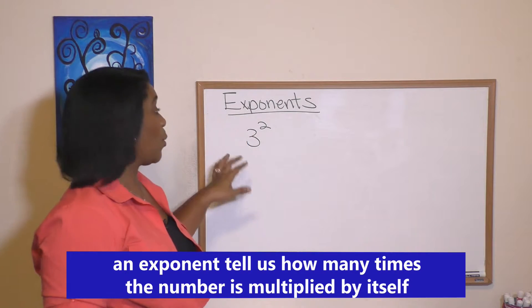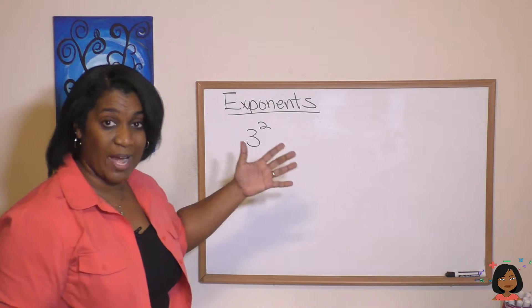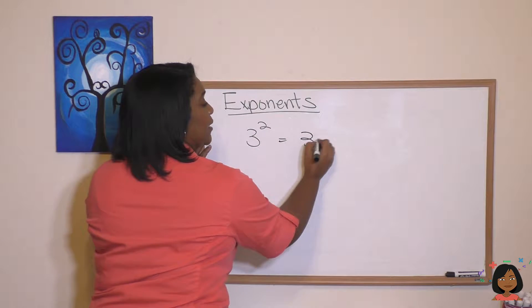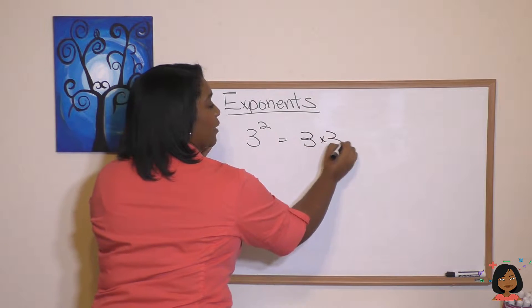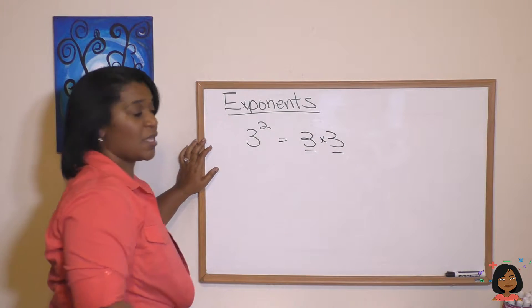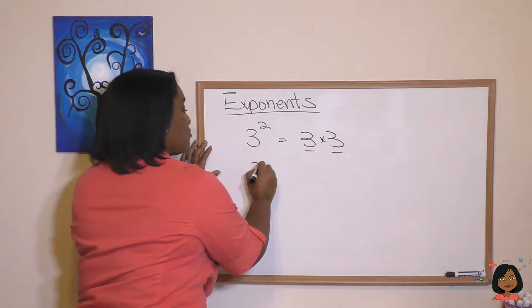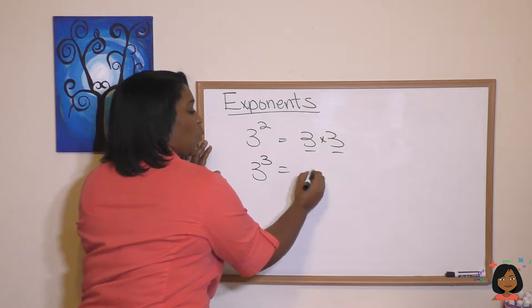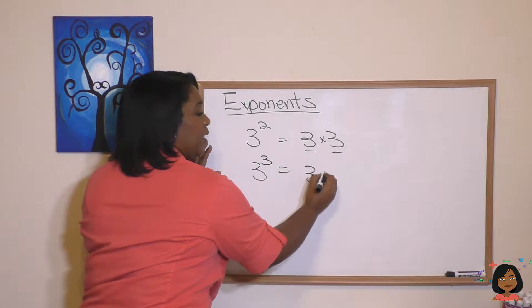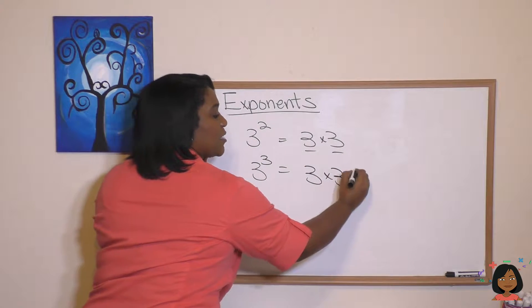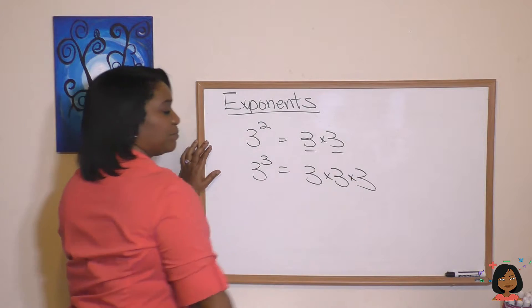So three squared means three times three — we did it two times. But if I had three to the third, we would do three times three times three.